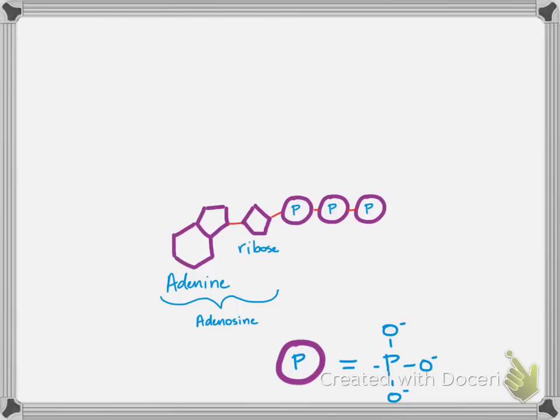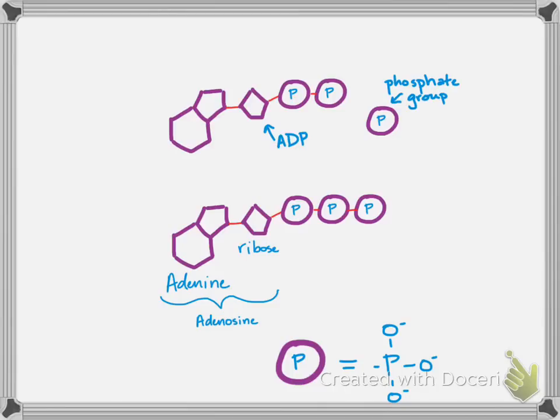So it's really easy for the bond between the second and third phosphates to break and release energy that's stored in that bond. What you're left with is an ADP and an inorganic phosphate group. This is all happening basically all the time.